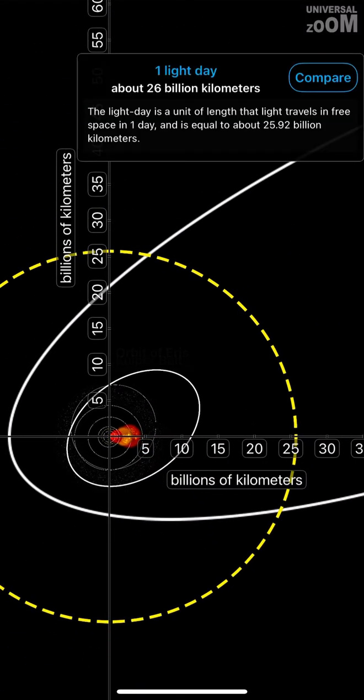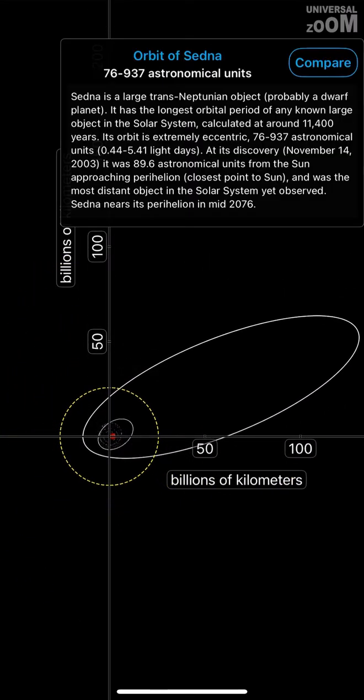One light day, about 26 billion km. Orbit of Sedna, 76 to 937 astronomical units.